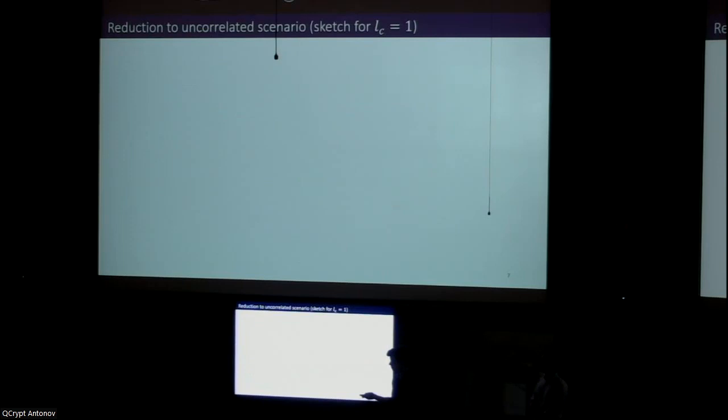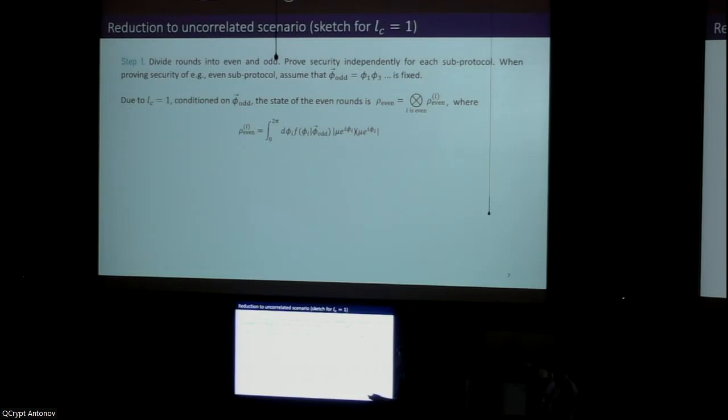The first step will be to divide the rounds into groups in order to guarantee independence within each group. For example, I will consider the simplest case in which the correlation length is one. In this case, we will divide rounds into even and odd rounds. We will treat each group as its own separate sub-protocol and prove security independently for each sub-protocol. When proving security of the even sub-protocol, it will be useful to assume that the odd phases are fixed to some value because, conditioned on this value, the states of the even rounds are actually independent from each other, with each of them having their own independent probability distribution.